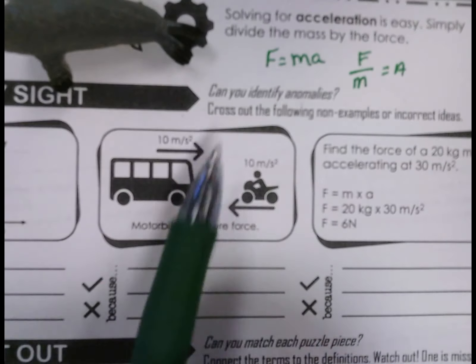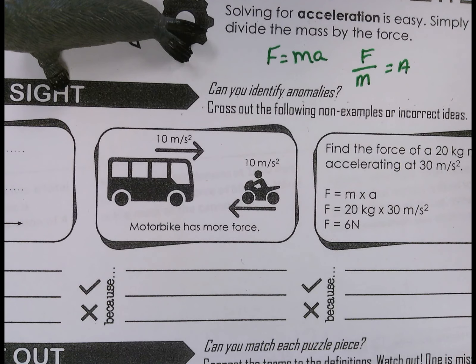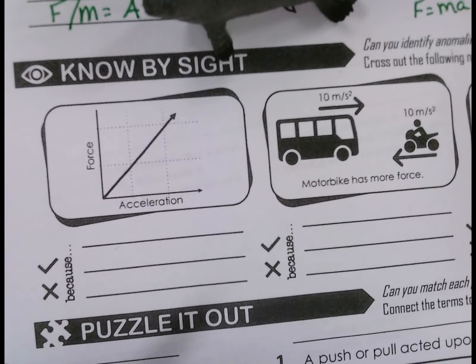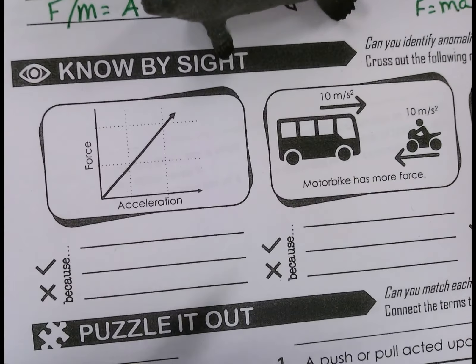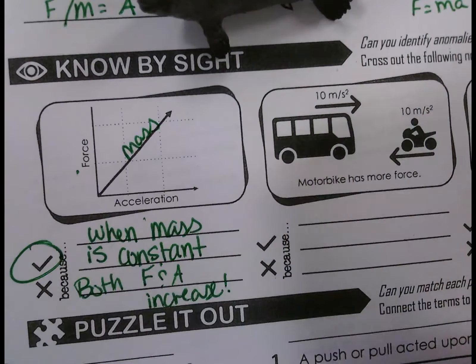Looking at this 'Now by Sight,' can you identify anomalies? Cross out the following non-examples or incorrect ideas that relate directly to force equals mass times acceleration. In other words, the Newton's second law of motion. You know this one from what we just did. If you have force and acceleration, mass must be constant. So this isn't accurate because when mass is constant, because if you have force and acceleration on your x and y axis, this has to be mass that's being graphed. When mass is constant, both F and A increase.